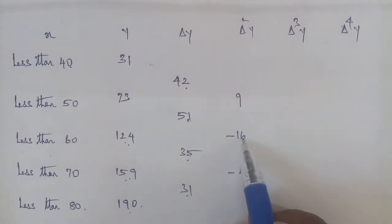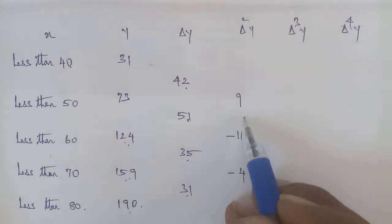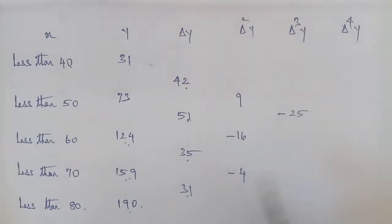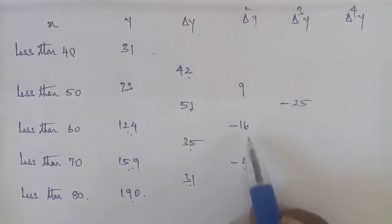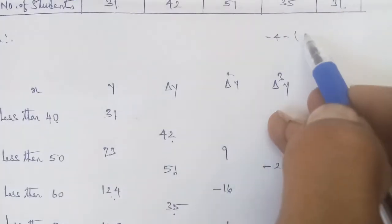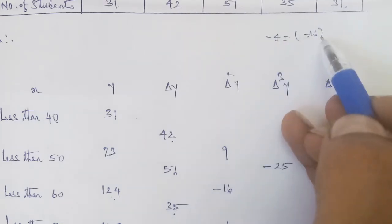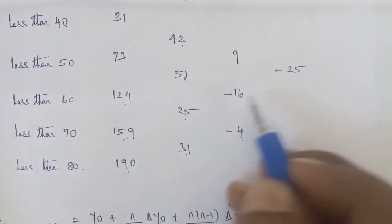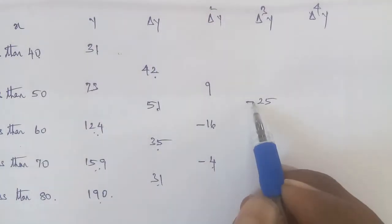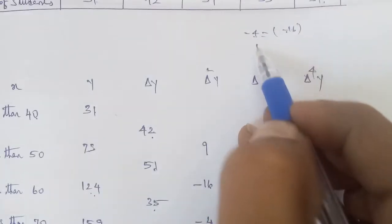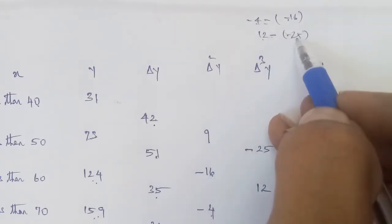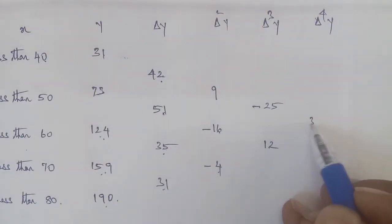For delta cubed y: minus 16 minus 9 = minus 25, and minus 4 minus (minus 16) = 12. For delta fourth y: the difference between minus 25 and 12 — since minus minus gives plus — 12 plus 25 = 37. So the middle entry values are identified in the difference table.